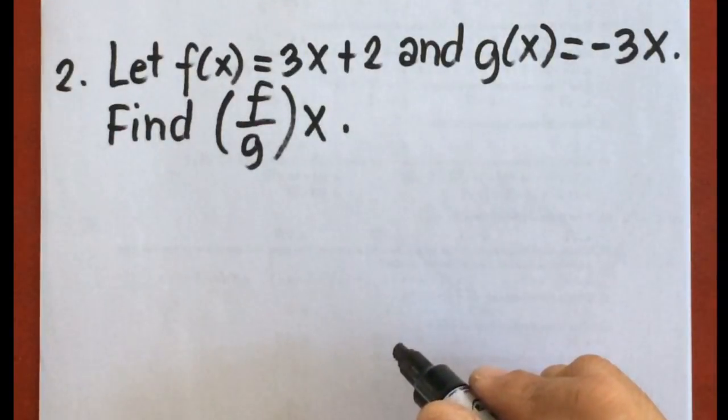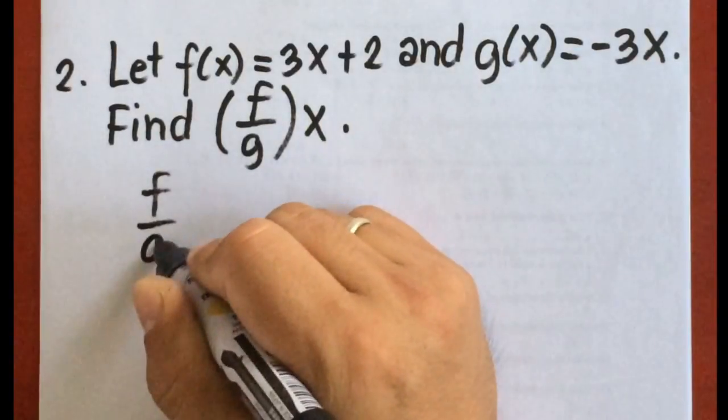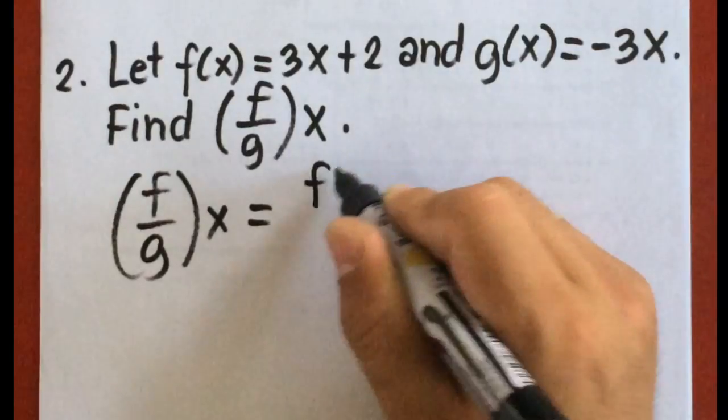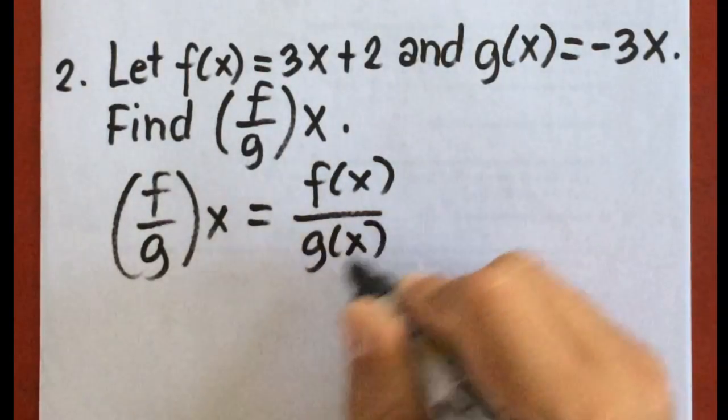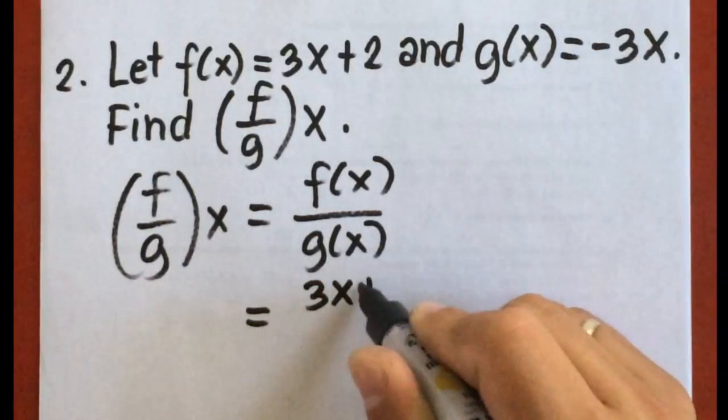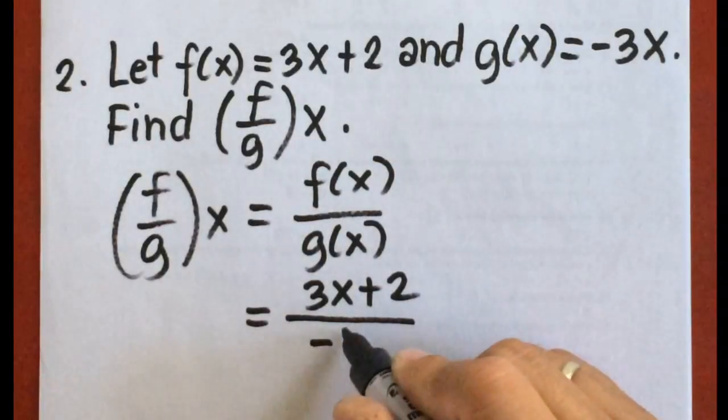Example number two, let f of x equals 3x plus 2 and g of x equals negative 3x. Find f over g of x. So f over g of x is equal to f of x over g of x. So f of x here is 3x plus 2, then this will be divided by negative 3x.